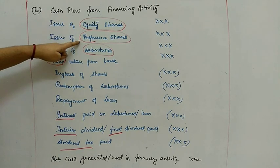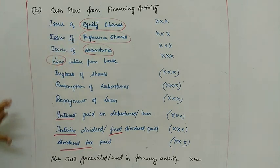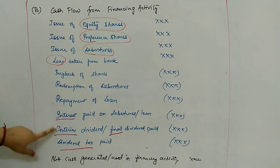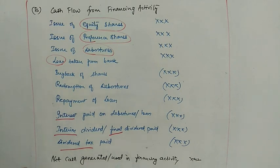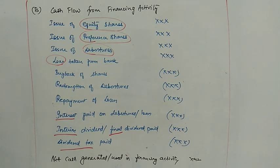So to summarize the financing activity: four main items — equity shares, preference shares, debentures, and loan. Each has issue (inflow) and buy-back or redemption or repayment (outflow). Also dividend paid and interest paid. The final answer is either 'net cash generated from financing activity' (positive) or 'net cash used in financing activity' (negative). So the cash flow statement covers operating, investing, and financing activity. Operating activity will be covered in full detail in the next session. Please like and share the video. Thank you.